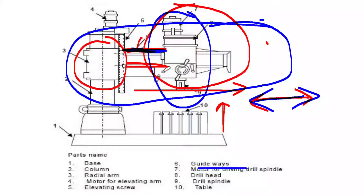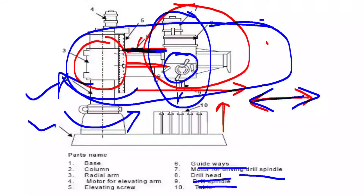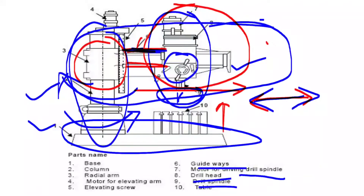The arm can also be swung around the column — these are the movements discussed earlier. The radial arm also contains the motor for driving the drill spindle, the driving head, the driving spindle, and the drill bit attached at the bottom. There is also a mechanism to control the feed — moving the drill bit upward and downward. So the whole assembly is the radial arm, with the column and base below it.